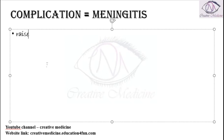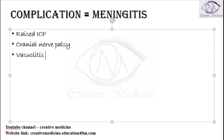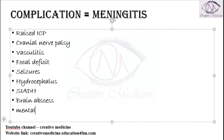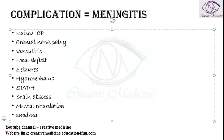In a case of meningitis, the complications are: the patient can develop raised intracranial pressure, which can compress the cranial nerves resulting in cranial nerve palsy. There can be inflammation of the cerebral vessels resulting in vasculitis. The patient can also develop focal deficit, seizures, or hydrocephalus. The patient can develop syndrome of inappropriate antidiuretic hormone (SIADH), brain abscess, or mental retardation.